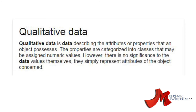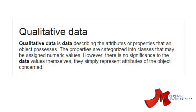Google defines qualitative data as data describing the attributes or properties that an object possesses. The properties are categorized into classes that may be assigned numerical values; however, there is no significance to the data values themselves — they simply represent attributes of the object concerned. Google defines quantitative data as information about quantities, that is, information that can be measured and written down with numbers.